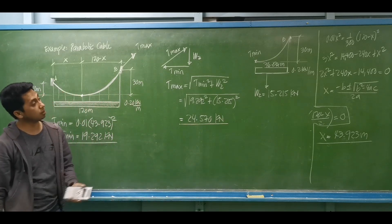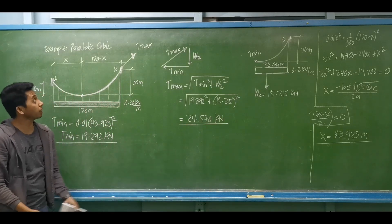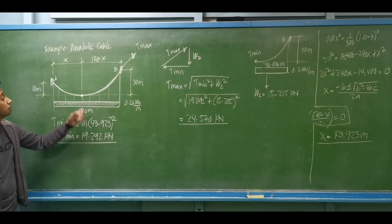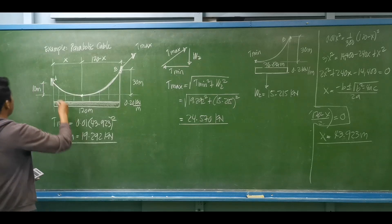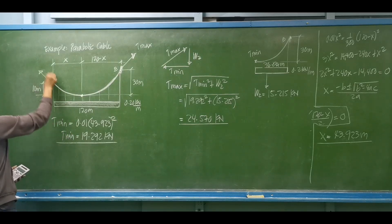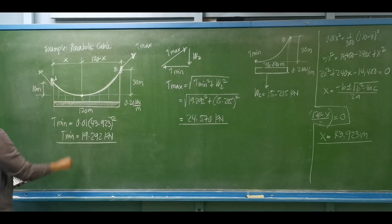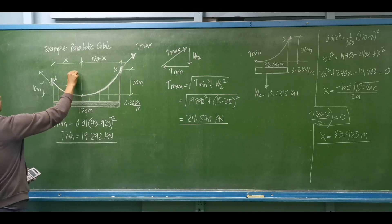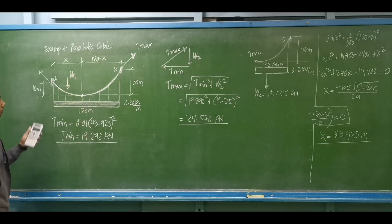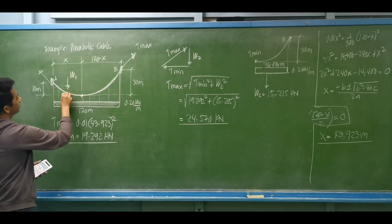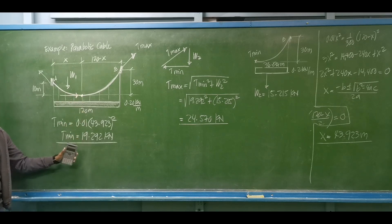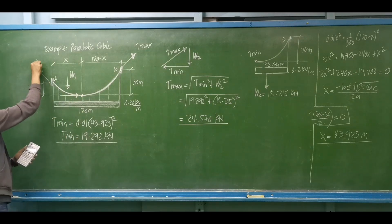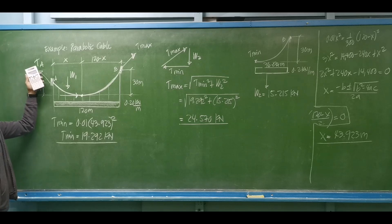That completes the parabolic cable example. To find the tension at support A, you would determine weight W1 on the left side, then compute the tension at A using the same vector approach with T-min and the corresponding vertical weight on the left side.